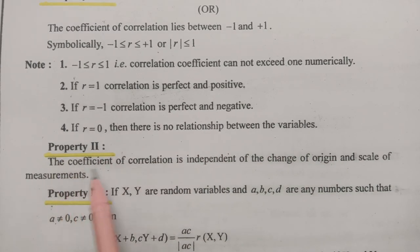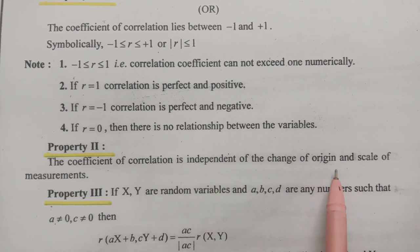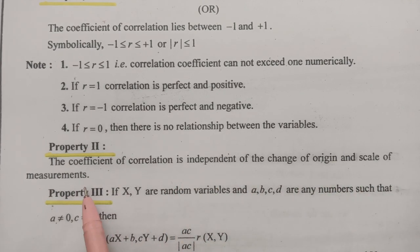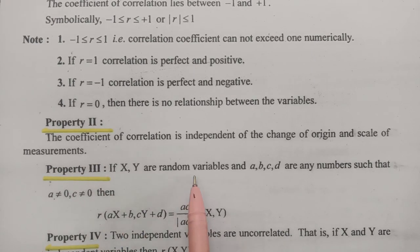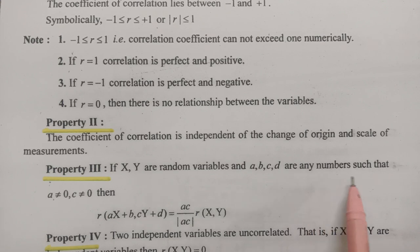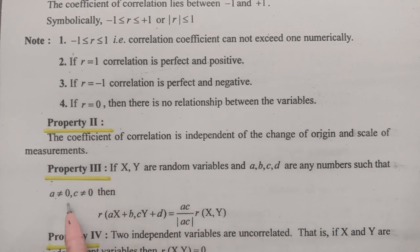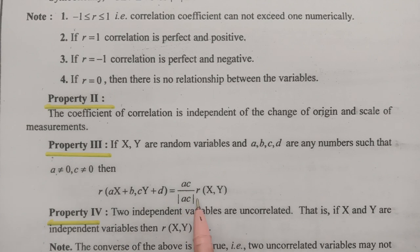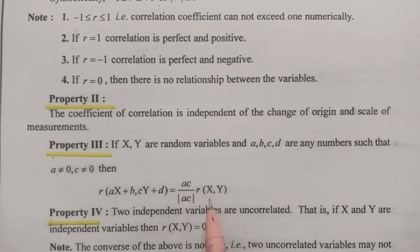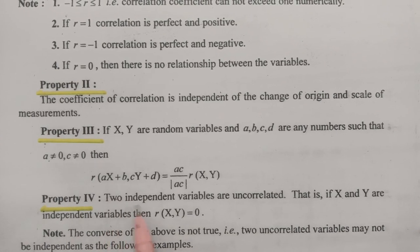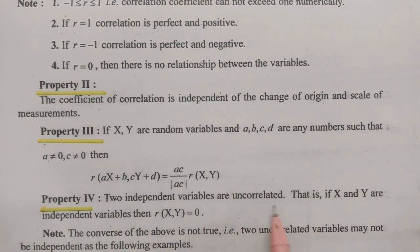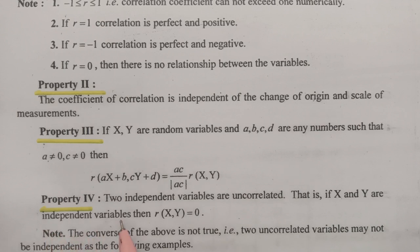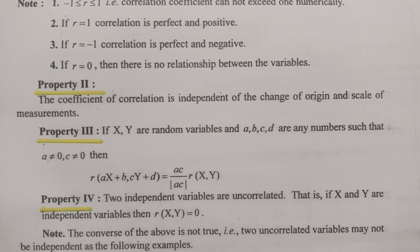Property 2: The coefficient of correlation is independent of the change of origin and scale of measurements. Property 3: If X and Y are random variables and a, b, c, d are any numbers such that a ≠ 0 and c ≠ 0, then the covariance of (aX + b, cY + d) equals (ac / |ac|) × gamma(X, Y). Property 4: Two independent variables are uncorrelated. If X and Y are independent variables, then gamma(X, Y) = 0.